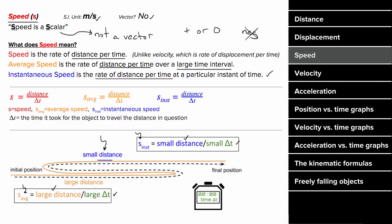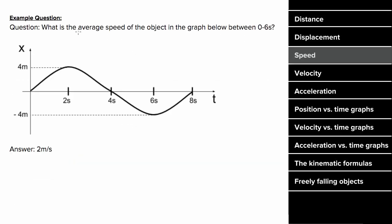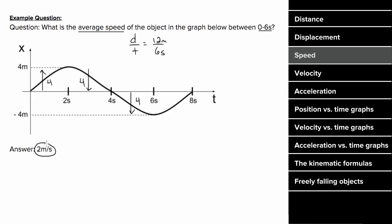What does an example problem for speed look like? If you had this graph and wanted to determine the average speed between zero and six seconds, you'd have to remember that average speed is the distance per time. The distance between zero and six seconds would be four plus four plus four, which equals 12 meters of distance. The time it took to travel that 12 meters was six seconds, which gives an average speed of two meters per second.